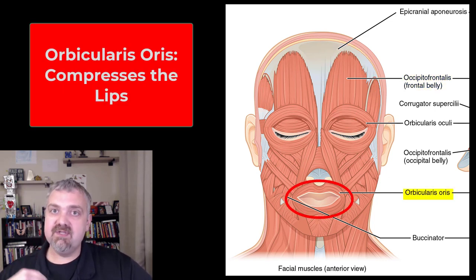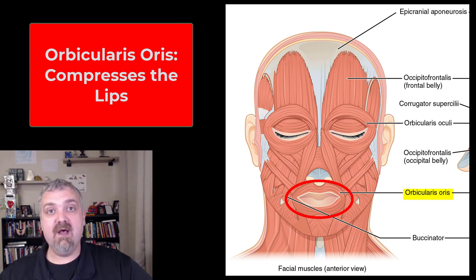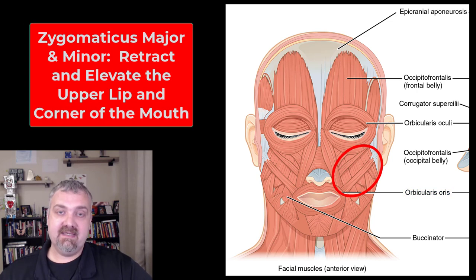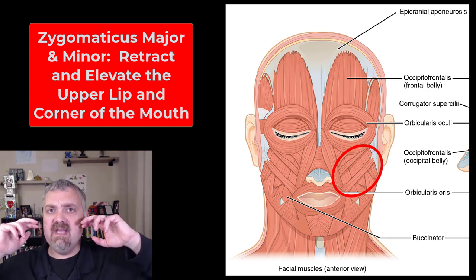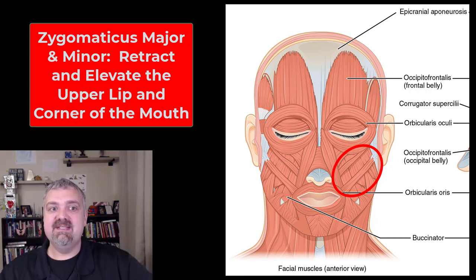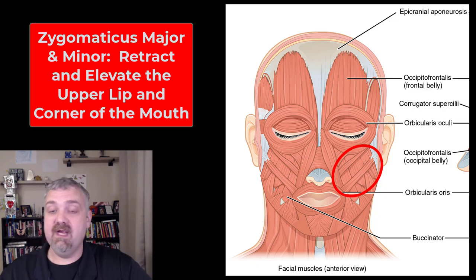Orbicularis oris is the circular muscle around the mouth — oral, orator, oral region. The orbicularis oris around the mouth compresses your lips. Then we have the zygomaticus — zygomaticus major and minor. They retract and elevate the upper lip and the corner of your mouth. Think about a big smile; it uses these zygomaticus muscles. Remember, the zygomatic bone is your cheekbone.